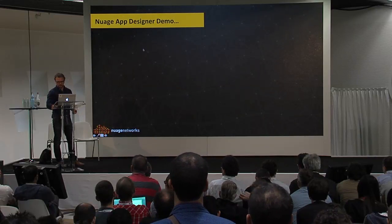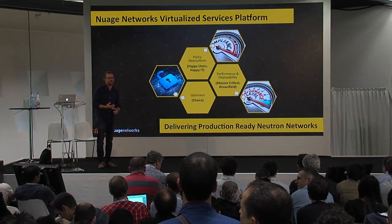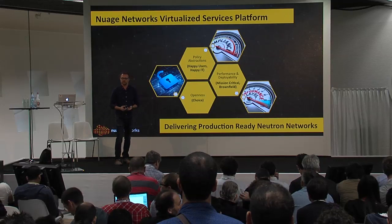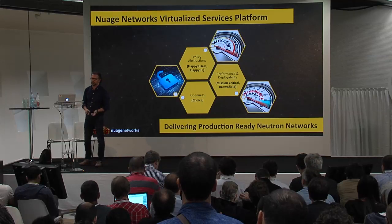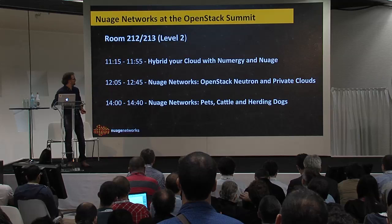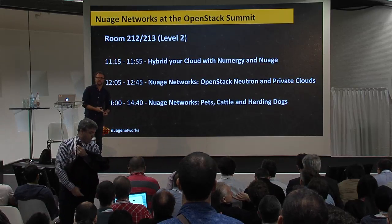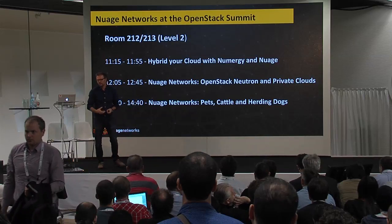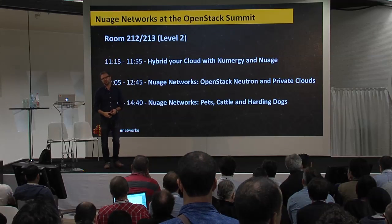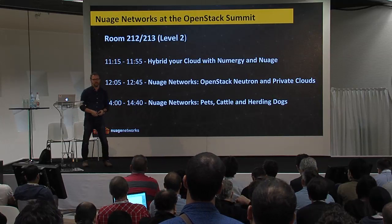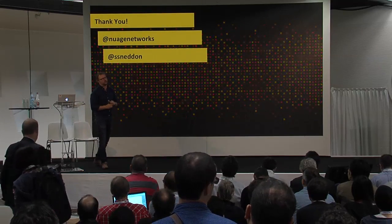To wrap things up — we're actually delivering on this policy-based framework today. We've got abstractions for IT users that make them happy, a very high performance and very scalable solution that's deployable, and a lot of customer references. It's an open solution that lets me mix environments, choose best-of-breed hardware, and have multiple cloud systems work together. Directly upstairs at 11:15, we've got three tracks in a row: Numergy, one of our marquee customers in Europe, will talk about how they're using Nuage and OpenStack together; then Jonas from my team will talk about use cases in private cloud and banking with SDN and OpenStack; and finally our CTO Dimitri Stiliadis will talk about scale and the future of networking and SDN for OpenStack. Thanks very much for your time — follow us on Twitter, we have a booth down the hall, and please attend our sessions this afternoon.